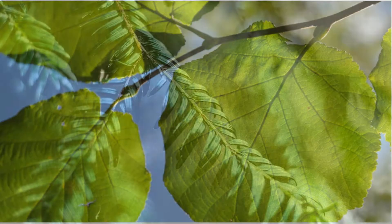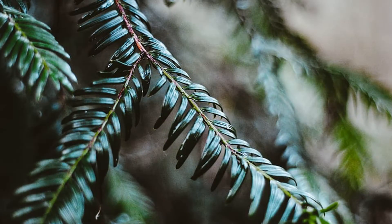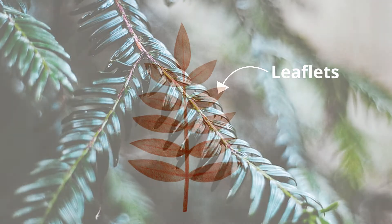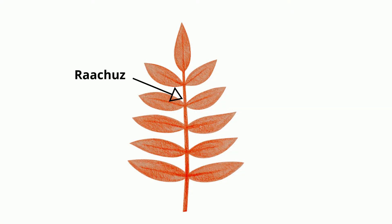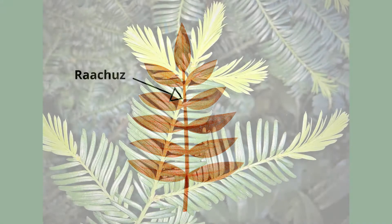In contrast to a single leaf, a compound leaf has leaflets which are attached to the middle vein and have their own stalks called the rachets. Here are a couple of examples.